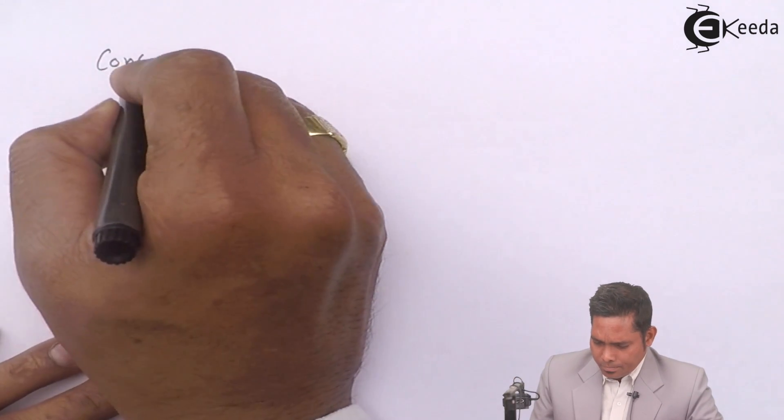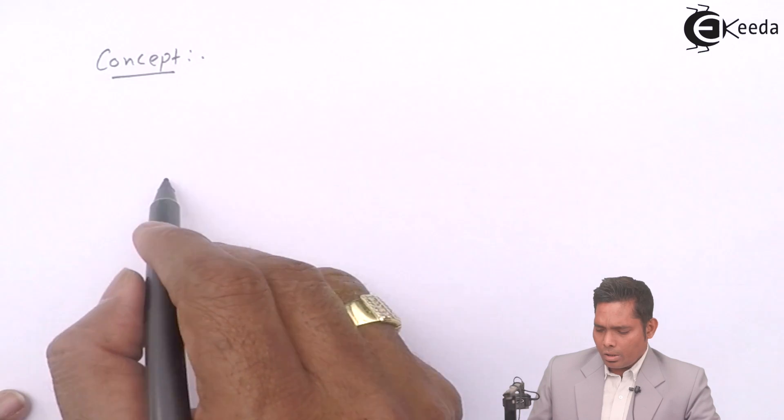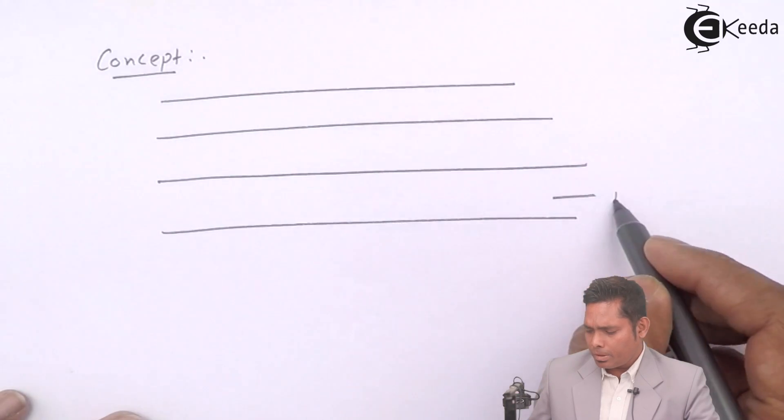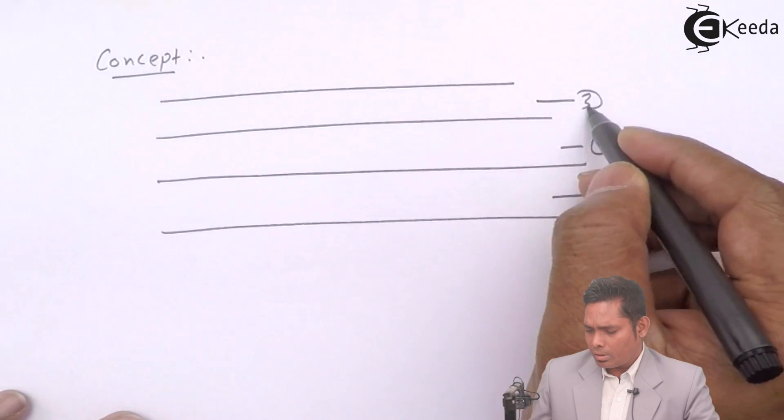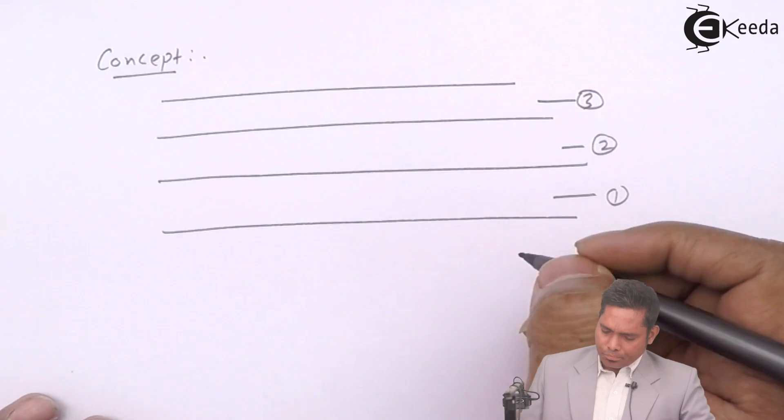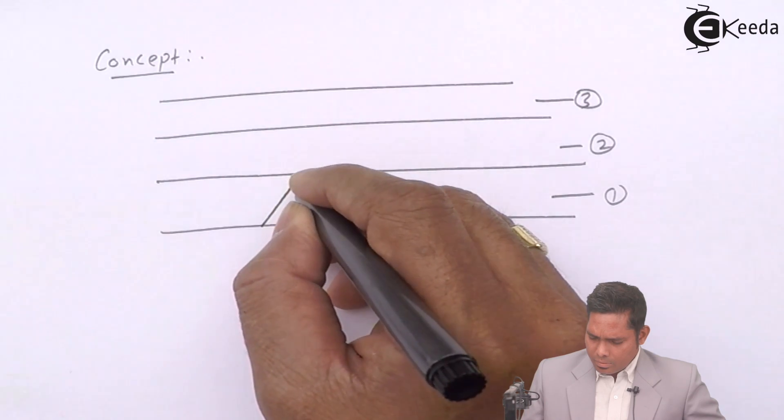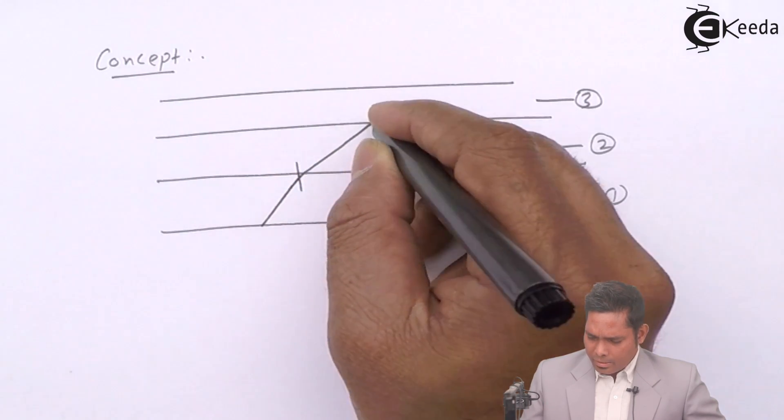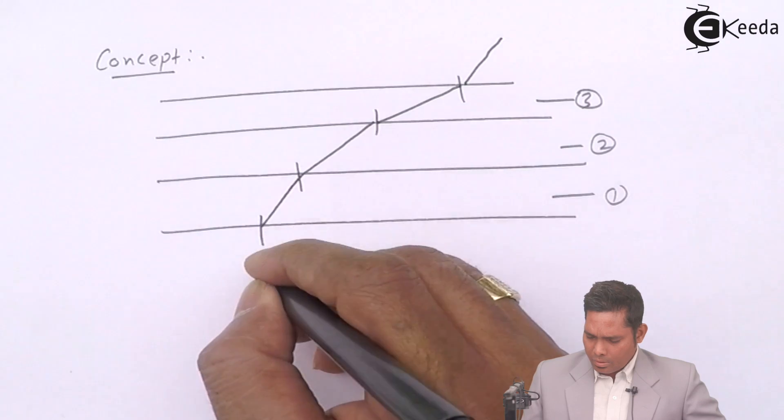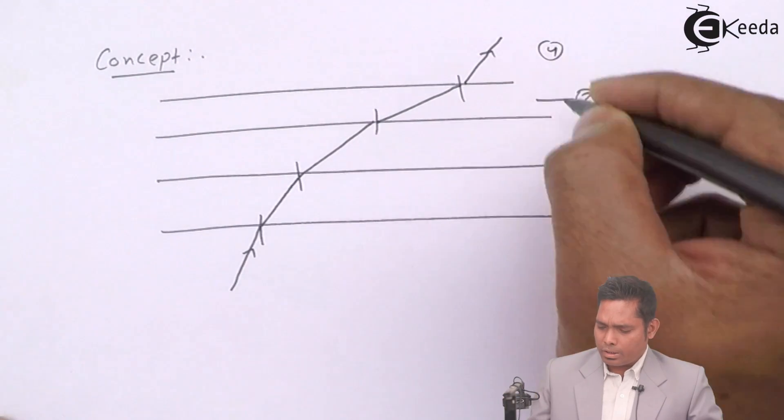Another concept about refractive index is that, if a ray of light passes through various media, multiple medium, say this is medium 1, this is 2, this is 3, suppose this is another medium. When light enters and then bends, then it comes out like this, any number of media, maybe this is 4th and this is 5th medium.